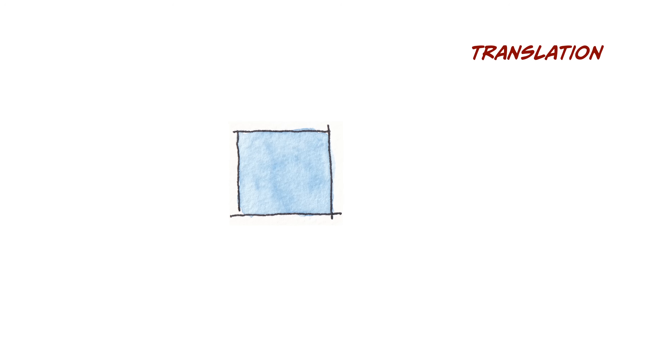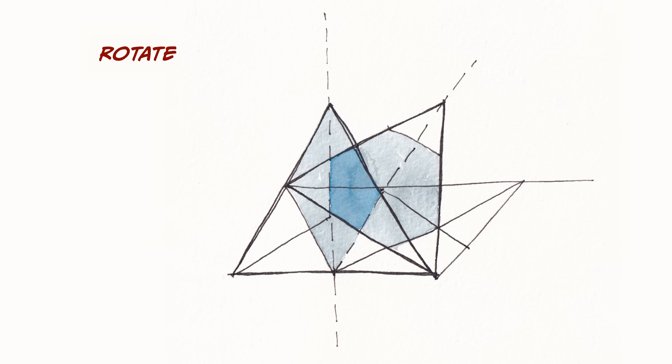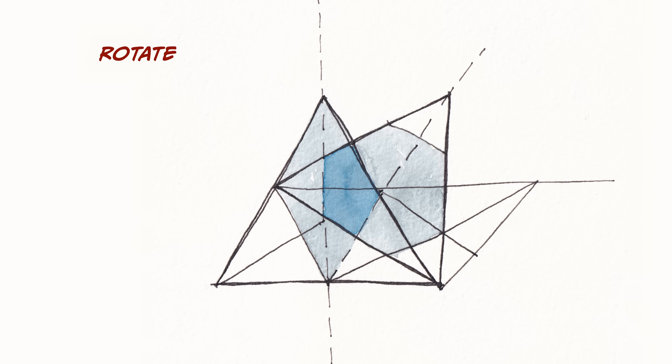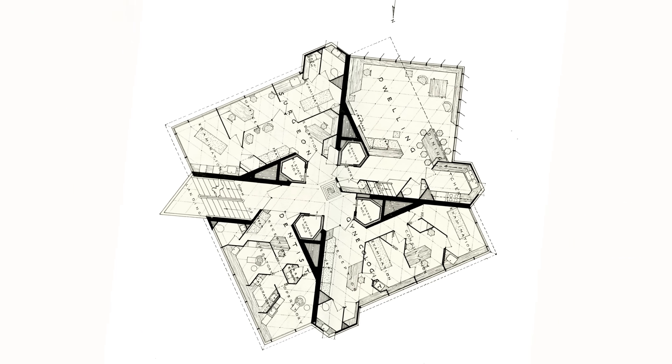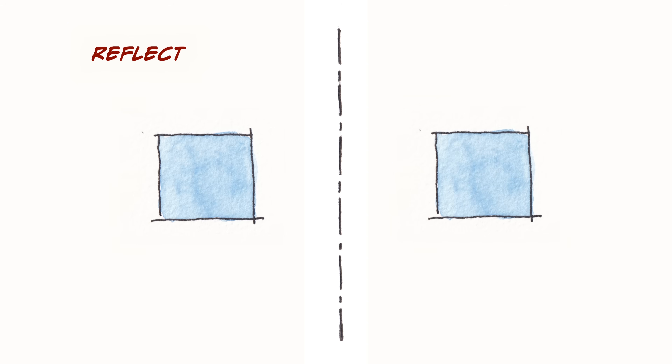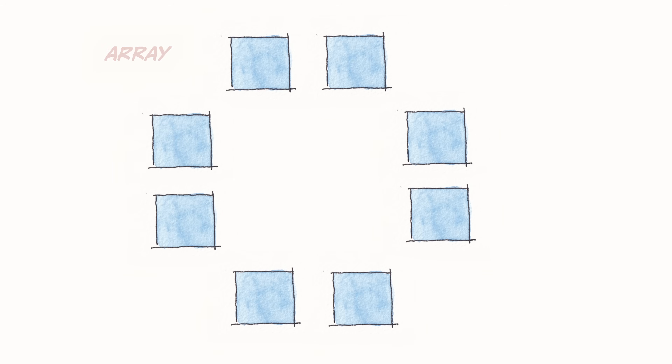The most basic transformation is called translation — moving the position of the form. Although this seems basic, it is the most used transformation in design. Another basic way to modify geometry is to rotate it; this is the diagram for Price Tower by Frank Lloyd Wright, where he rotates a triangle to develop the floor plan. The third is to reflect the geometry around a center axis. An array is a repetition of a form — arrays can be linear, in a circle, in a grid, or three-dimensional.